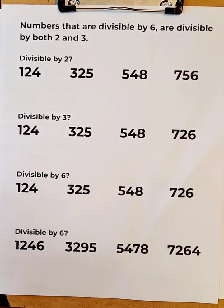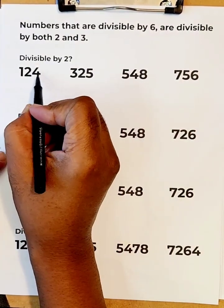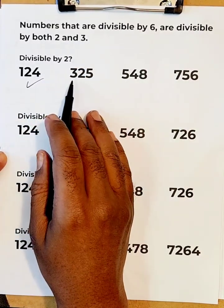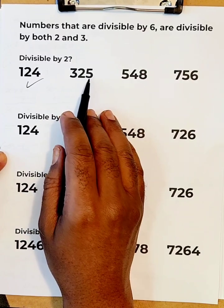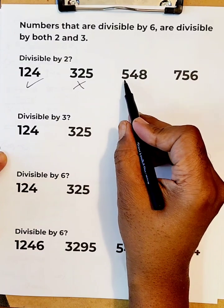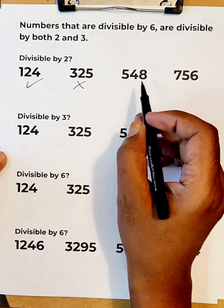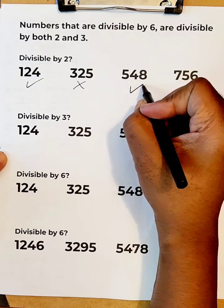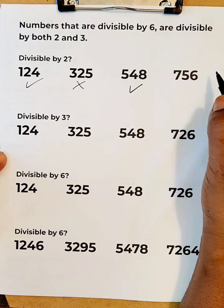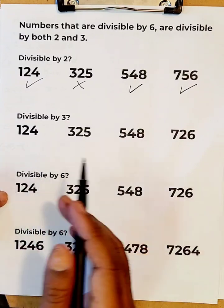If a number is divisible by two, it's an even number. 224 ends in a four — that's an even number, so it is divisible by two. 325 ends in an odd number, so this is not divisible by two. 548 ends in an even number, so it is divisible by two. And 756 ends in six, which is an even number, so it can be divided by two.